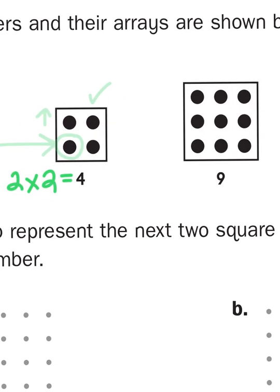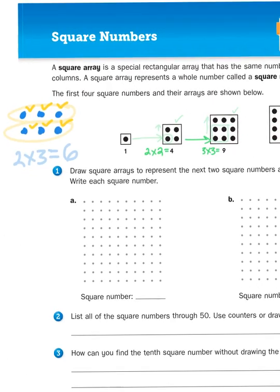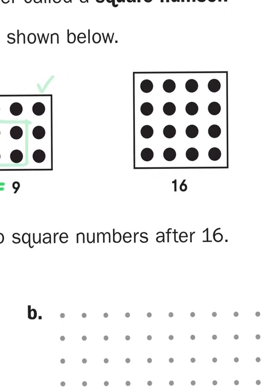Now for the third array I do the same thing again. I take my original array from the last square number — 2 groups of 2 for 4 — and then I add another dot to each column and then add another column. So now this array shows me 3 groups of 3. 3 times 3 equals 9, and it just increases from there. You'll see that in the fourth array I have 16, because I have 4 rows with 4 in each row. 4 times 4 is 16.